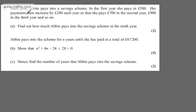In question number seven, we're told each year Abby pays into a saving scheme. In the first year she pays in £500. Her payments then increase by £200 each year, so that she pays £700 in the second year, £900 in the third year, and so on. In part A for two marks, we're asked to find out how much Abby pays into the saving scheme in the tenth year.